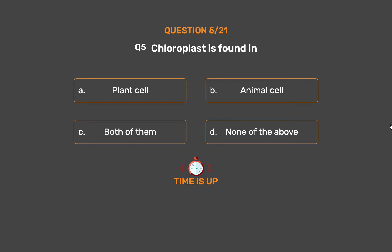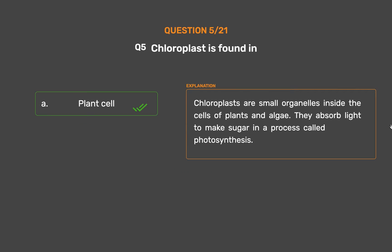The correct answer is Option A: Plant cell. Chloroplasts are small organelles inside the cells of plants and algae. They absorb light to make sugar in a process called photosynthesis.